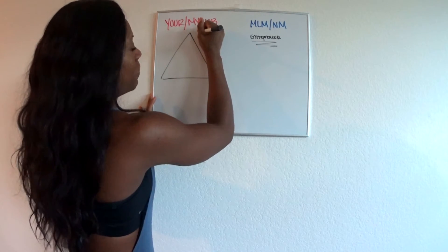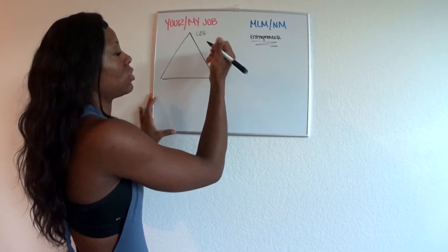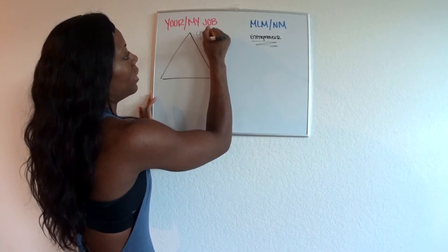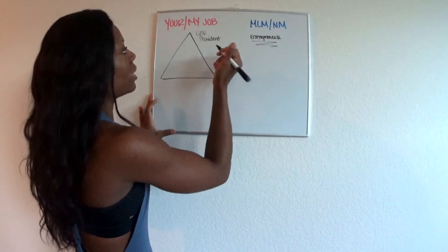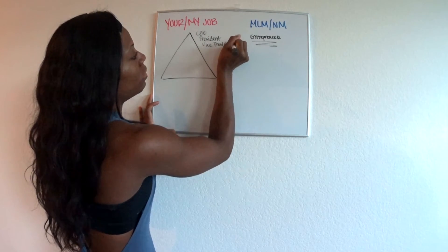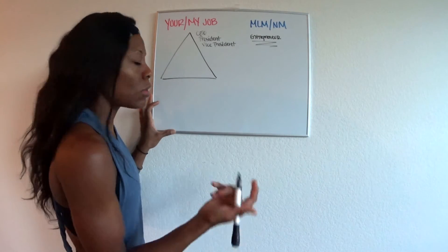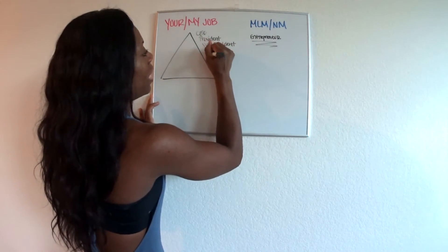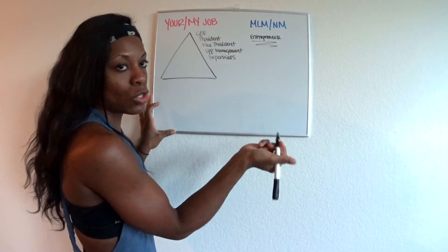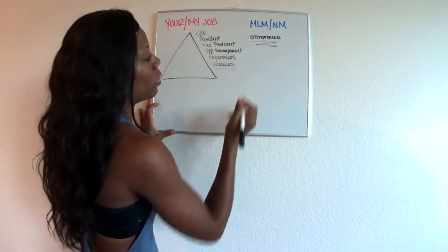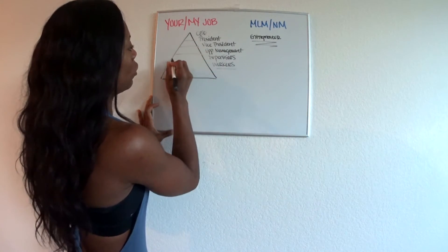Your job will always look like a pyramid. At the very top of your pyramid you have a CEO. Underneath the CEO you have the president of the company who was recruited by the CEO. Underneath the president you have a vice president, who was recruited by the president, who was recruited by the CEO. Do you see where we're going with this? Underneath the vice president you have upper management. Underneath the upper management you have supervisors. Underneath the supervisors, who do you have? All the hardworking workers. This is literally what your pyramid looks like. It will never change.